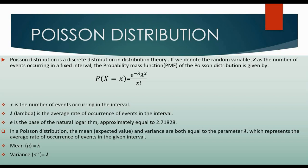Here, x is the number of events occurring in the interval, lambda is the average rate of occurrence of events in the interval, and e is the base of the natural logarithm, approximately equal to 2.71828. In a Poisson distribution, the mean and variance are both equal to the parameter lambda, which represents the average rate of occurrence of events in the given interval.